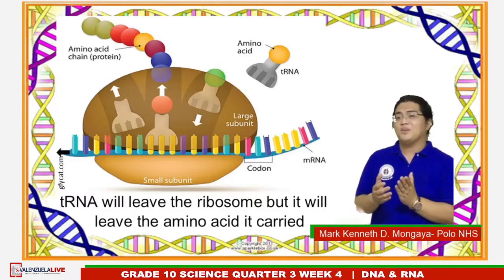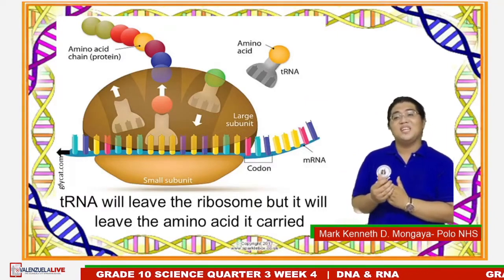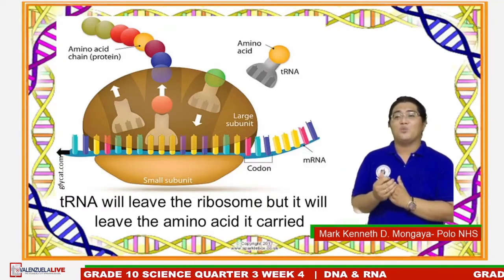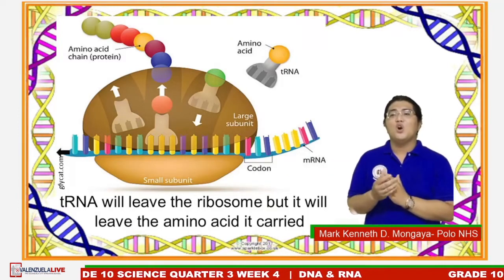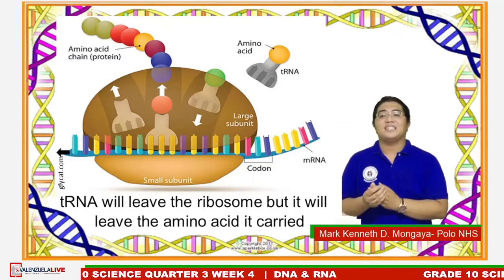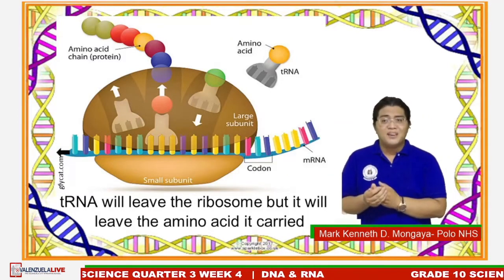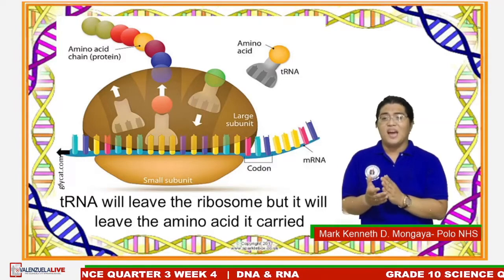If you're wondering how did you know that the tRNA that went with the AUG codon would be carrying an amino acid called methionine — well, for that you would refer to the codon chart.